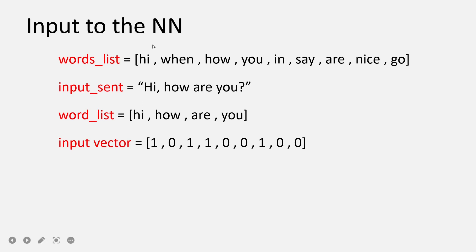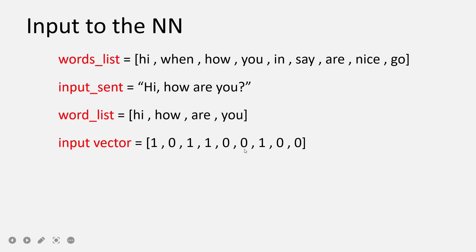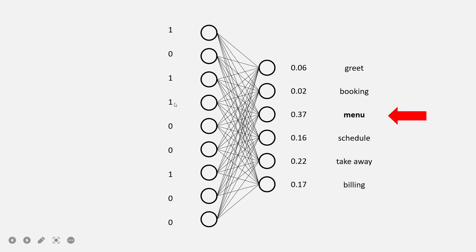For example, the first word in the vocabulary is 'hi'. Is 'hi' present in the word list? Yes, it is present, so we write one. The second word is 'when' — it is not present, so we have zero. Similarly 'how' is present: one. 'You' is present: one. 'In' is not present in 'hi how are you': zero. 'Say' is zero. 'Are' is present in the third position: one. 'Nice' and 'go' are not present: zero. So the input vector is one zero one one zero zero one zero zero. This input vector will be fed into the neural network.